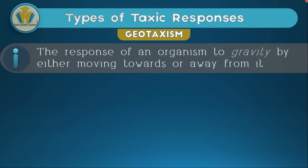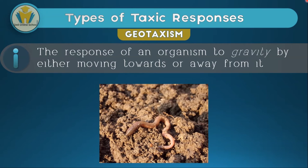A perfect example of geotaxism is the earthworm. Earthworms move towards the force of gravity — that force that pulls everything downward. So an earthworm shows positive geotaxism because it always moves towards gravity. Another less common example involves a small rat on a tilted surface; after a certain angle is reached, the rat will begin to move against gravity. However, for the Zambian syllabus, you should always remember that the earthworm shows positive geotaxism.